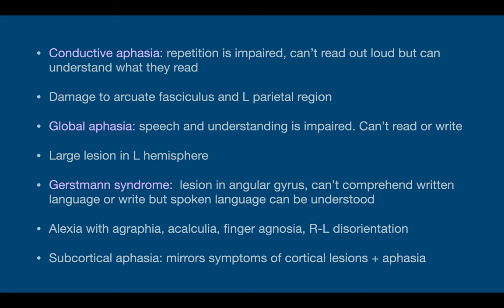Conductive aphasia is when repetition is impaired. The patient can't read out loud, but they can understand what they read. It's due to damage to the arcuate fasciculus in the left parietal region. Global aphasia is the worst of the aphasias because both speech and understanding are impaired — the patient can neither speak, read, nor write. It's usually caused by a large lesion in the left hemisphere. Gerstmann syndrome is a lesion in the angular gyrus. In these patients, they can't comprehend written language and can't write, but spoken language can be understood.